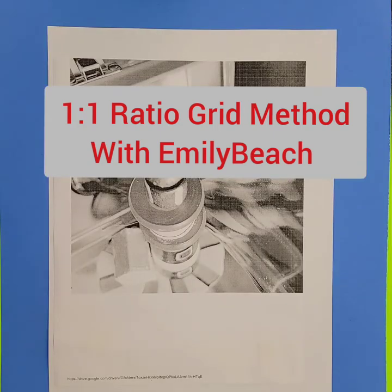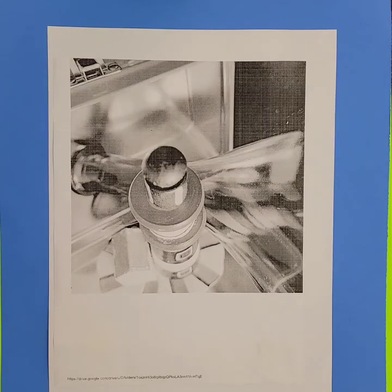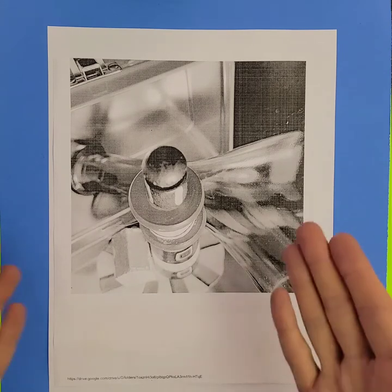Hi, I'm Emily Beach, and in today's video I'm going to talk to you about how to do a one-to-one ratio grid to copy a photo or image onto another piece of paper for a drawing or painting.